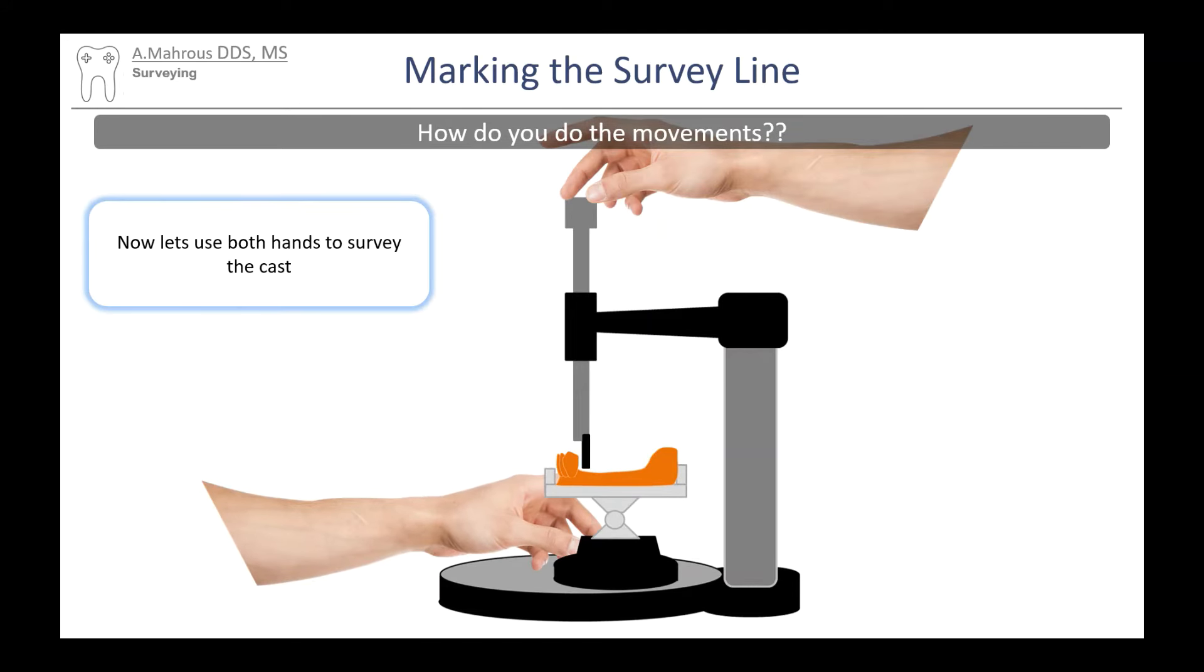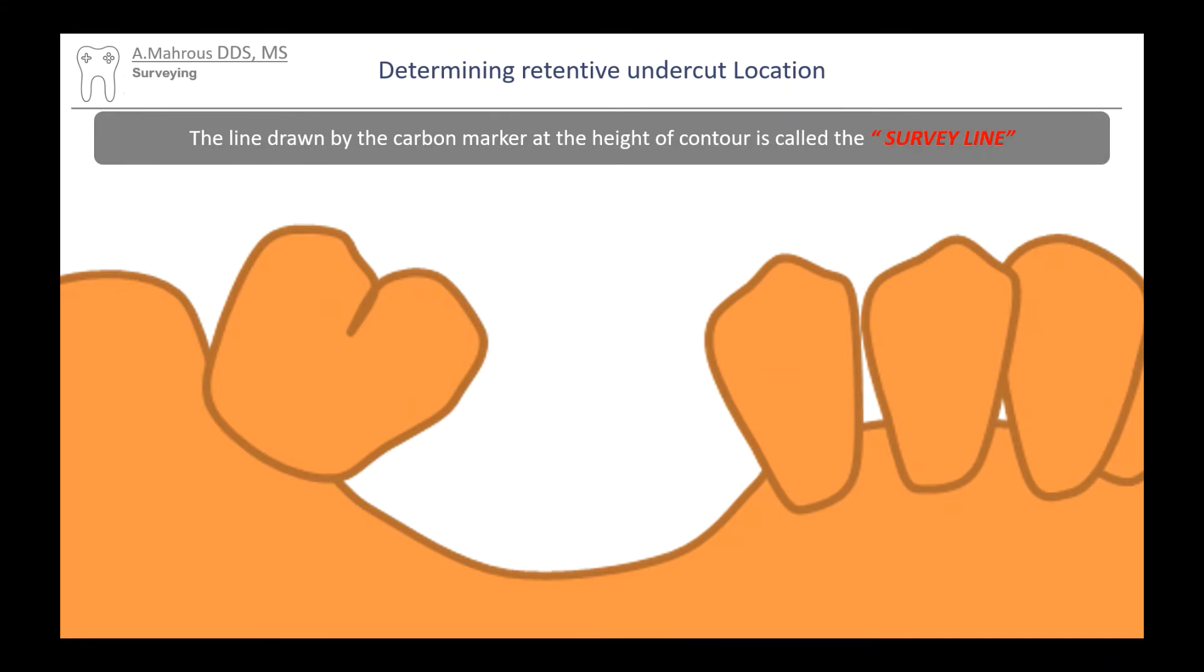One hand will be controlling the mandrel and the other hand will be moving the table. When you move them together, you'd be able to move the mandrel up and down the contours of the tooth as you move the table to move the cast across the mandrel. As you do this, the side of the lead marker will rub against the height of contour, thereby drawing a line that we call the survey line.